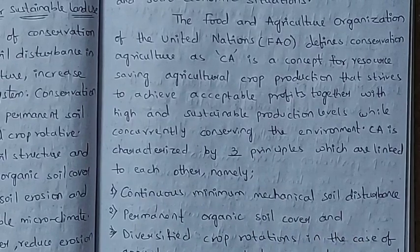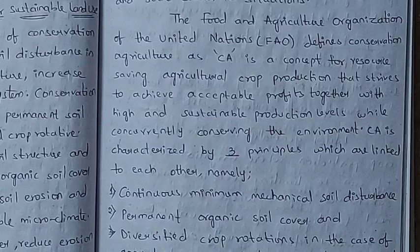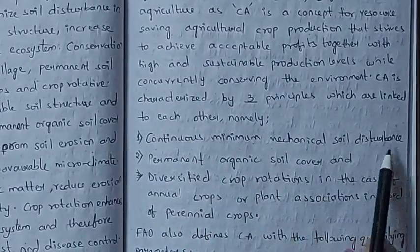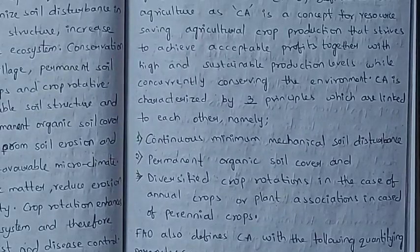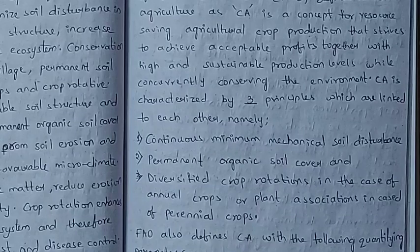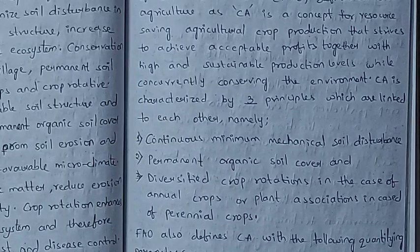Conservation agriculture is characterized by three principles which are linked to each other. The first principle is continuous minimum mechanical soil disturbance. The second principle is permanent organic soil cover, which can be achieved using decomposed materials and natural organic matter.